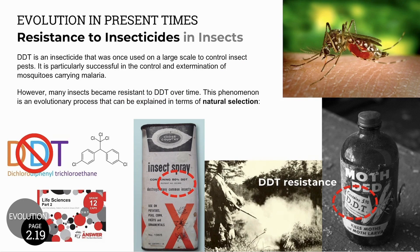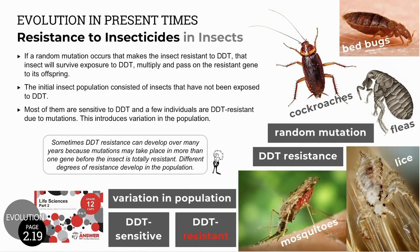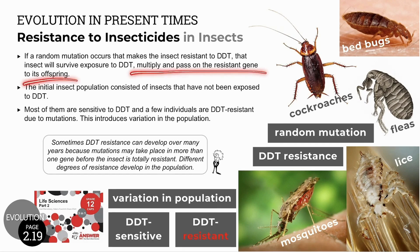This can be explained in terms of the evolutionary mechanism of natural selection. Insects like cockroaches, bedbugs, fleas, lice, or mosquitoes multiply very quickly, which increases the chances of a random mutation occurring. If a mutation makes the insect resistant to DDT, it survives exposure to the insecticide, multiplies, and passes on the resistant gene to its offspring.